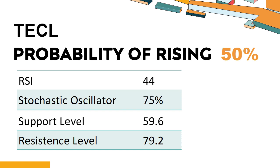TECL's short-term resistance level is 75.8. If it breaks through 75.8 during the session, it will look up to 79.2.